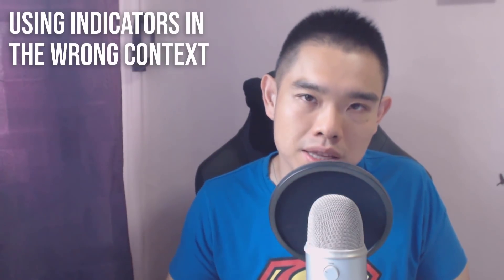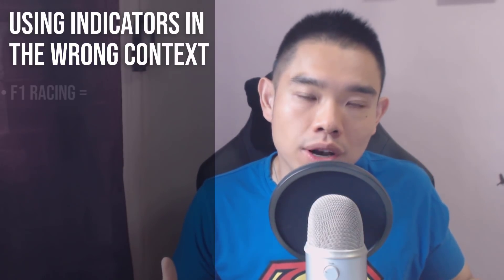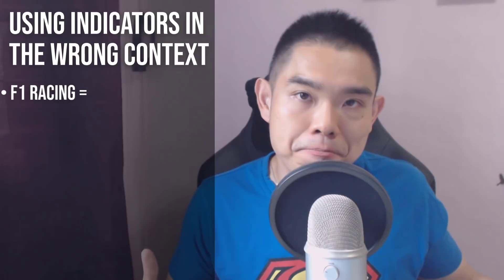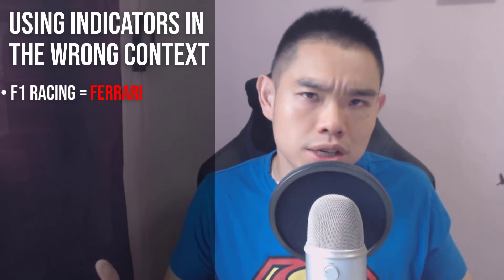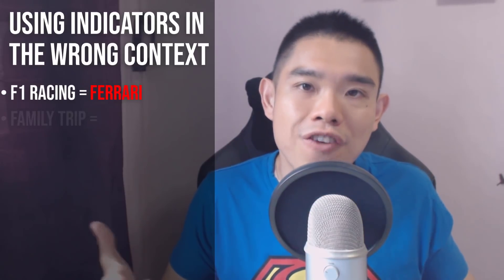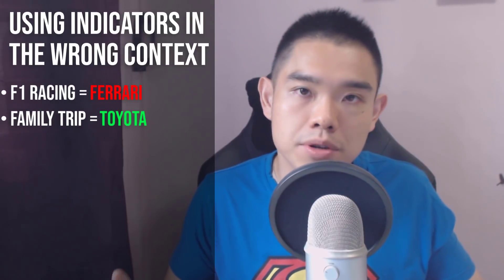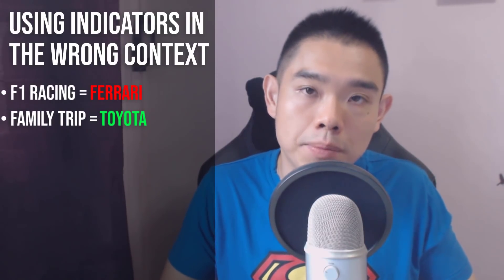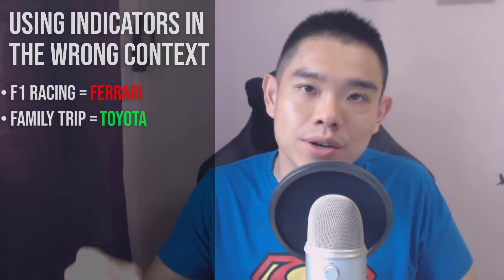The second reason why traders lose money with indicators is because they don't use them in the right context. For example, let's say you want to race in an F1. Will you take a Toyota or a Ferrari? It's a no-brainer — you'll pick a Ferrari because it's fast and could potentially win you an F1 race. But if you're going out with your family and want a fuel-efficient car, you'd pick the Toyota, because it's fuel-efficient and can house more people. You need to use the right indicator within the right context.